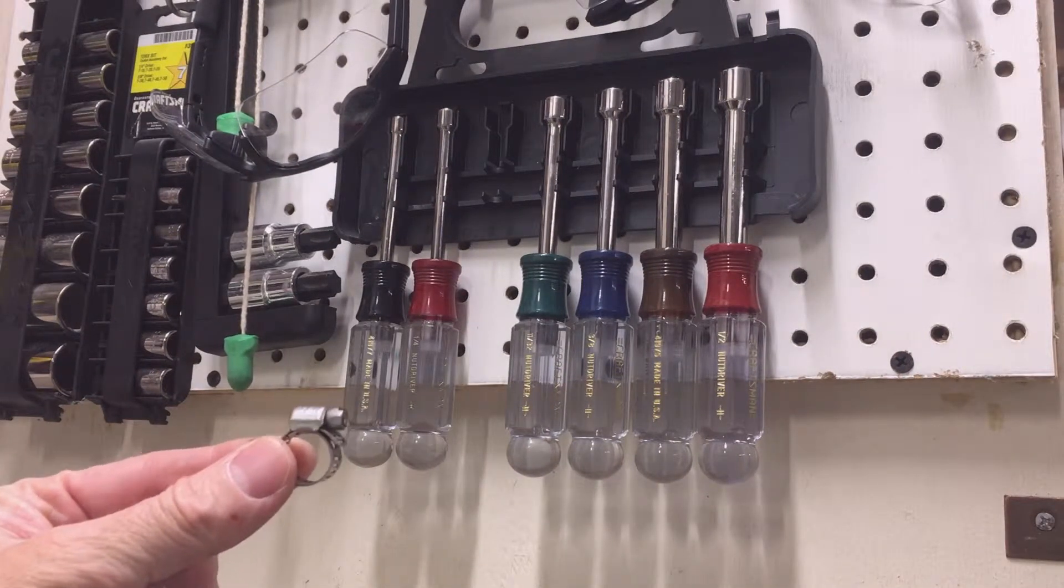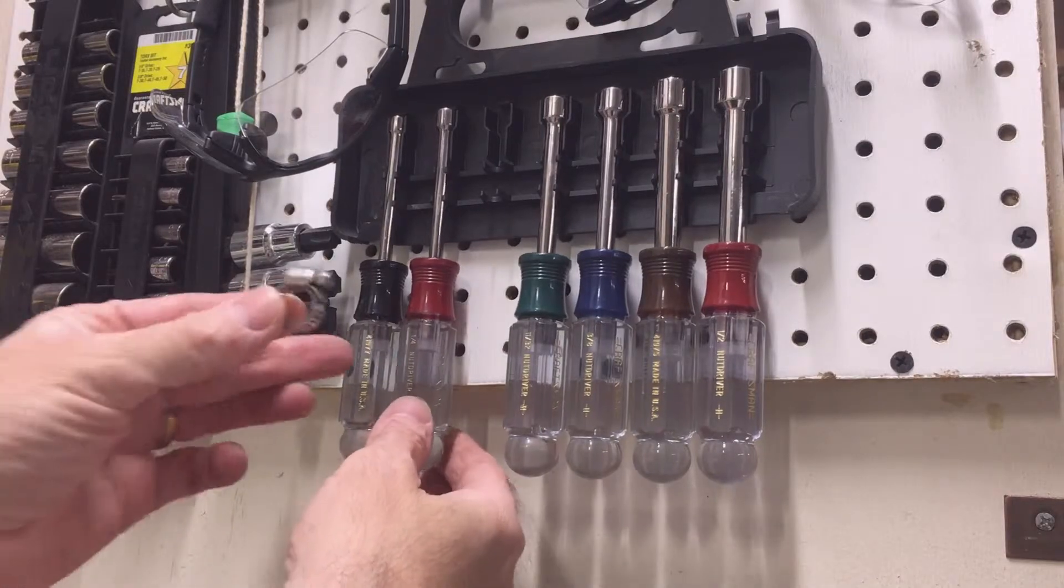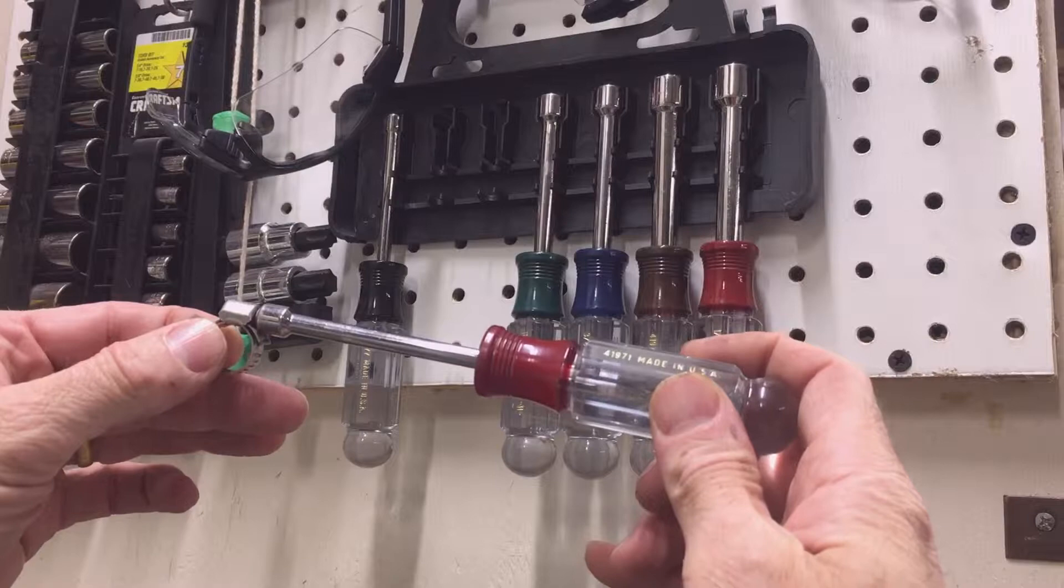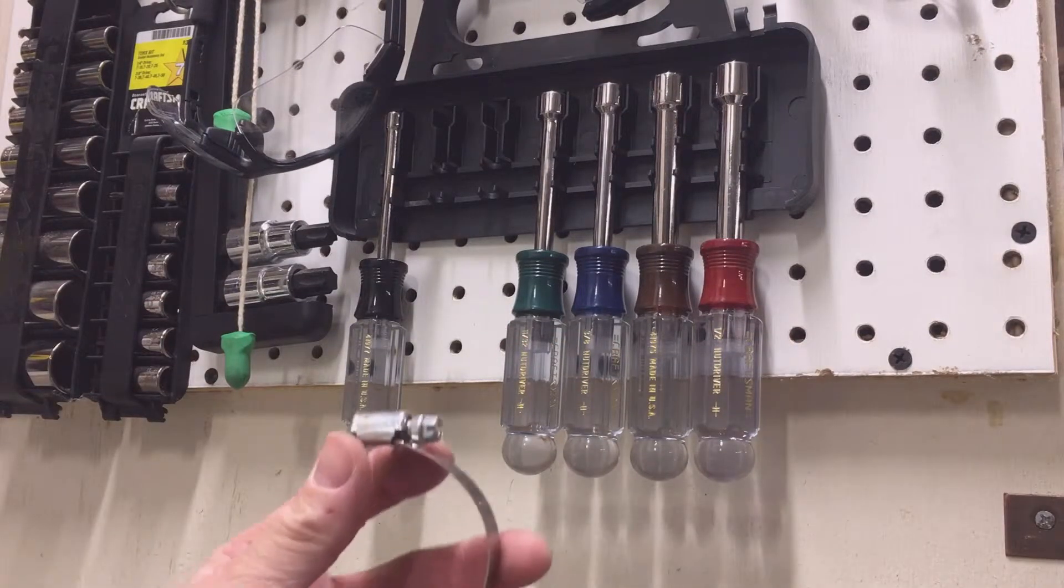For the smaller hose clamps that are used on fuel lines, use a 1/4 inch nut driver. However, a word of caution.